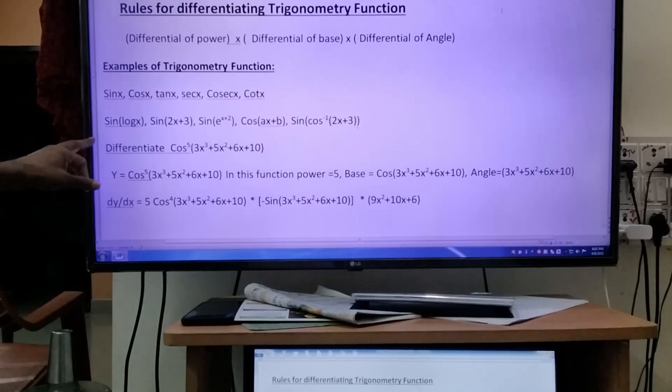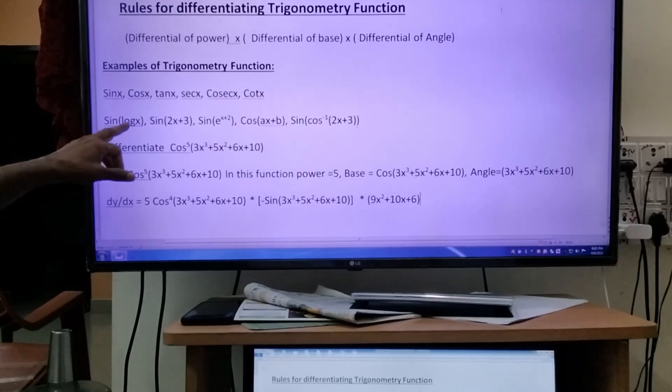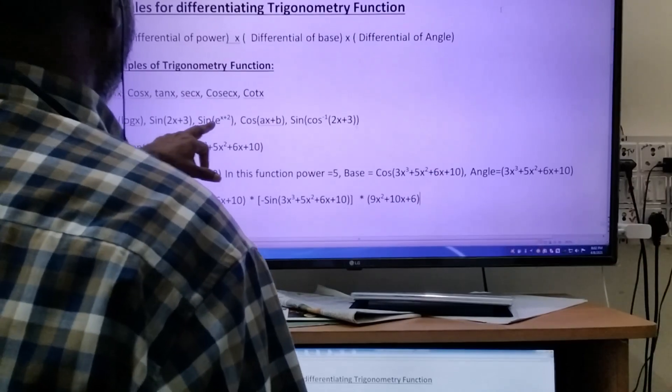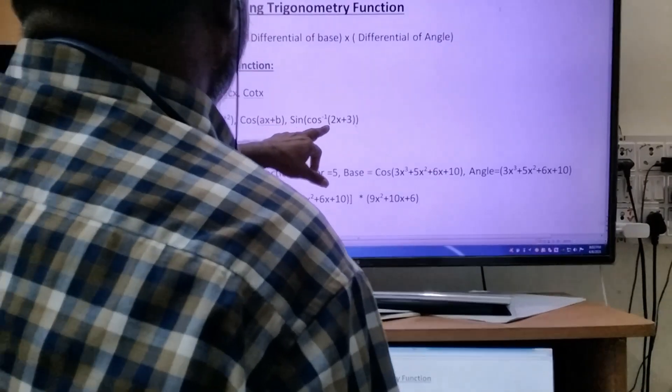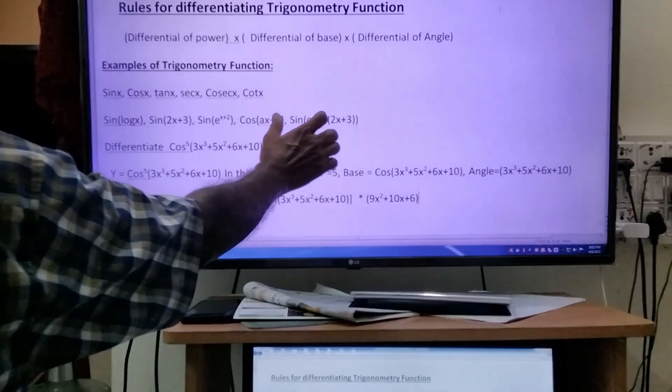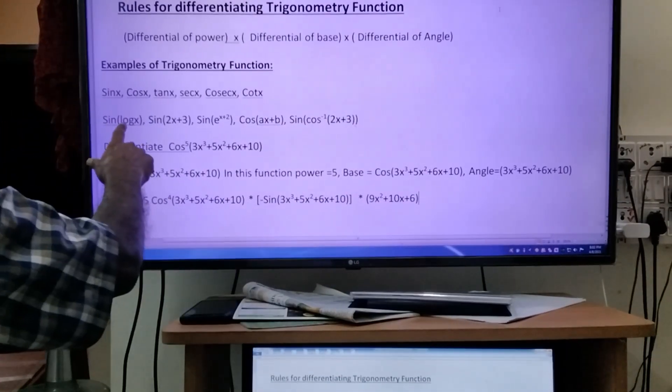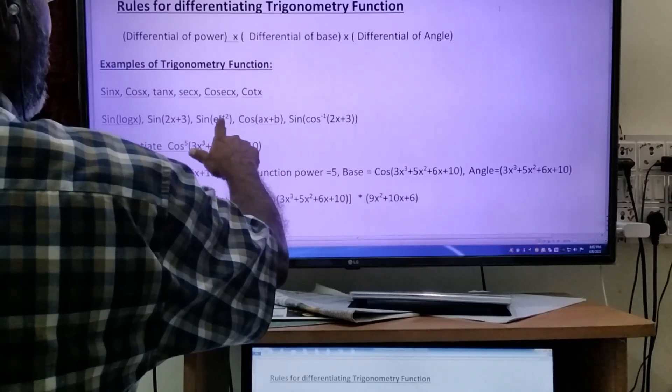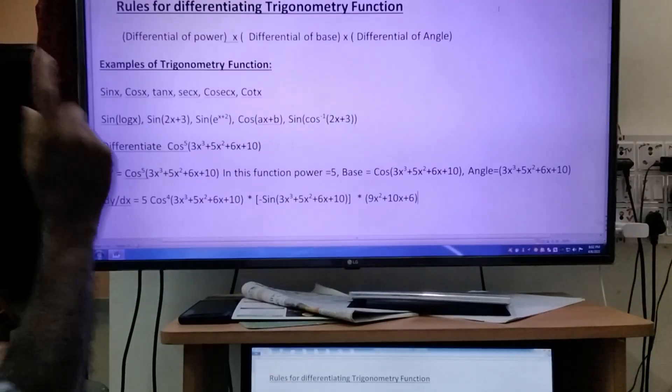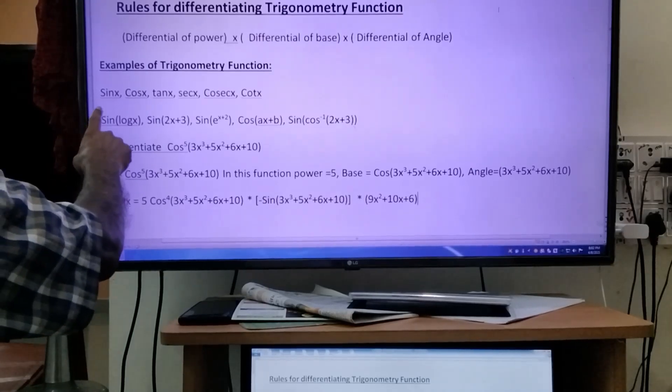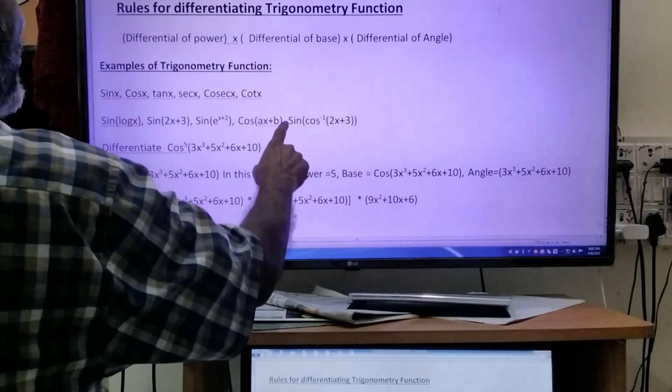In the second line, what is available in brackets: log x, 2x plus 3, e to the power of x plus 2, ax plus b, cos x plus 2x plus 3. Don't bother about these families - logarithmic families, algebraic families, exponential families, and inverse families. The main thing is the first one: sin, sin, sin, cos, sin. That's why it's called trigonometry function.